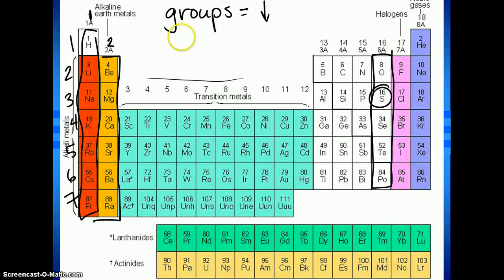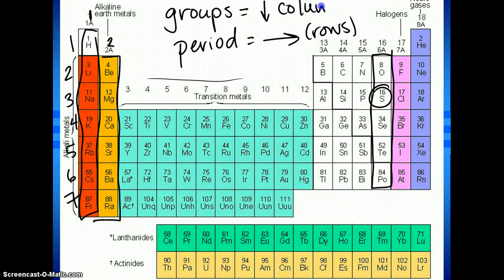So the other term that we use is period. And period is the name for the rows. Let me put columns. So in this case, sulfur is in the period 3. Here's period 3. You move across and you get to sulfur.